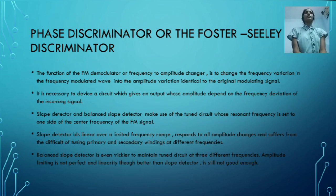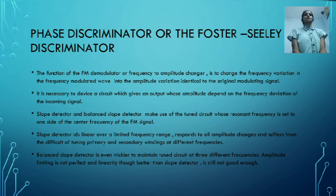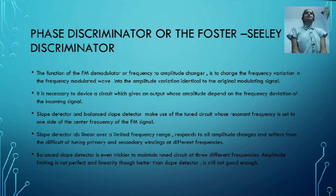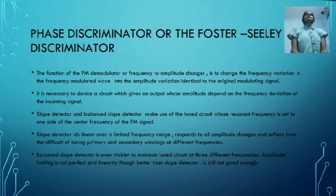In this presentation, I am going to explain the working of the phase discriminator or Foster-Seeley discriminator. The function of an FM demodulator is to change the FM or frequency modulated wave into the ordinary modulating signal — that is, we have to convert frequency variation into amplitude variation. The basic methods for FM demodulation are the slope detector and balanced slope detector. At the output of the circuit, we intend to get an S-shaped frequency response, meaning the output voltage is directly proportional to the incoming signal.